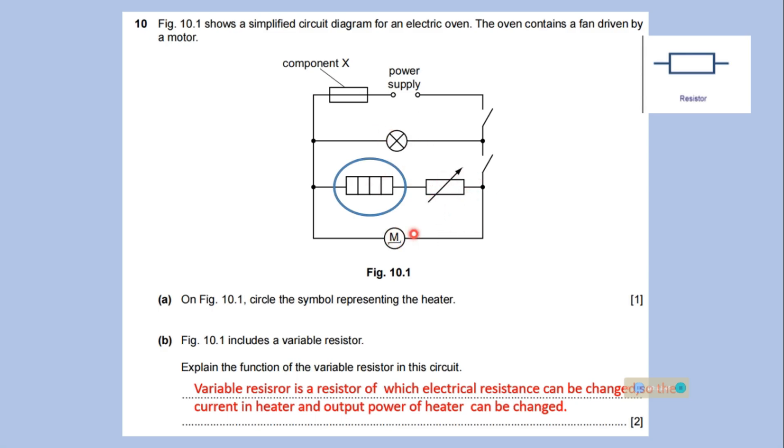Here, don't get confused with the symbol between fuse. This is for resistor, this is a fixed resistor. When you see an arrow across this symbol, this shows a variable resistor.